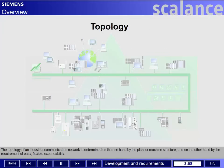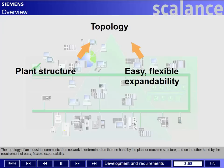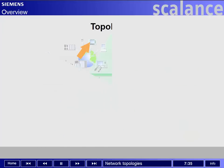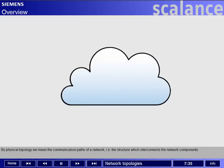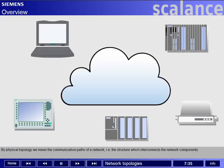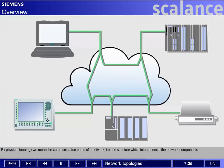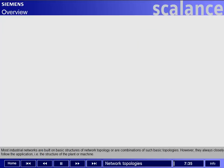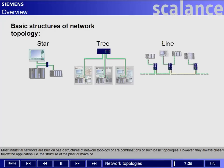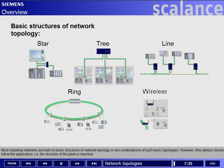Installation, parameterization and diagnostics must be possible without expert knowledge. The topology of an industrial communication network is determined on the one hand by the plant or machine structure, and on the other hand by the requirement of easy, flexible expandability. In the following scenes we will present you the standard topologies used in automation technology. By physical topology we mean the communication paths of a network, i.e. the structure which interconnects the network components. Most industrial networks are built on basic structures of network topology, or are combinations of such basic topologies, and they always closely follow the application — the structure of the plant or machine.